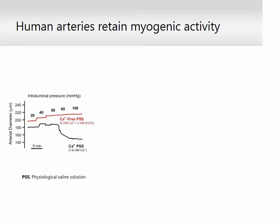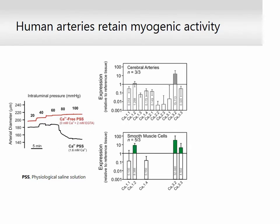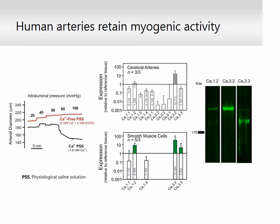Quantitative PCR analysis on whole arteries and isolated cells showed that messenger RNA of L-type CAV 1.2, as well as T-type CAV 3.2 and CAV 3.3, was enriched in the smooth muscle layer. Western blotting confirmed the expression of these three subtypes at the protein level in human cerebral arteries.